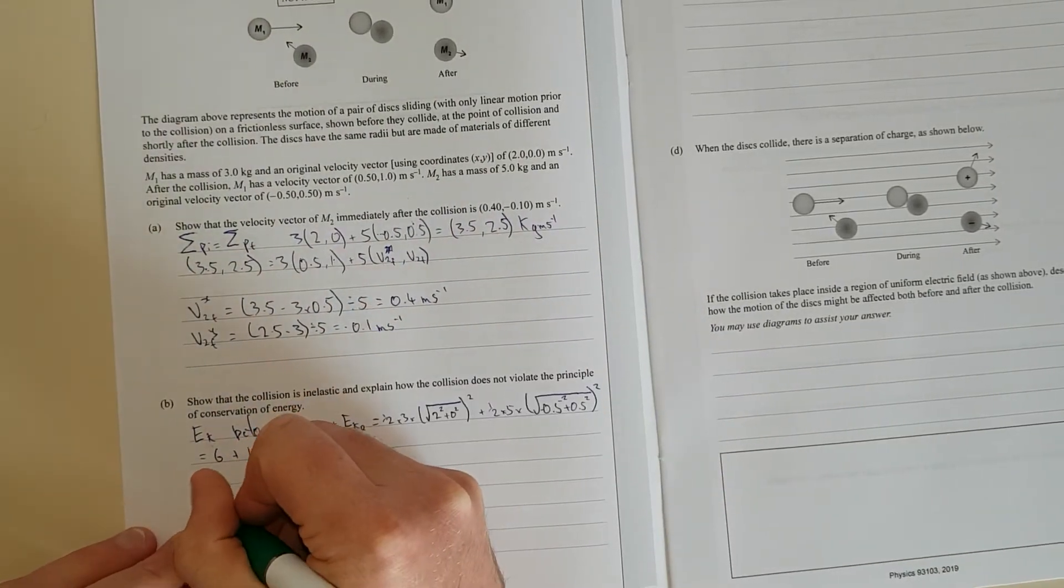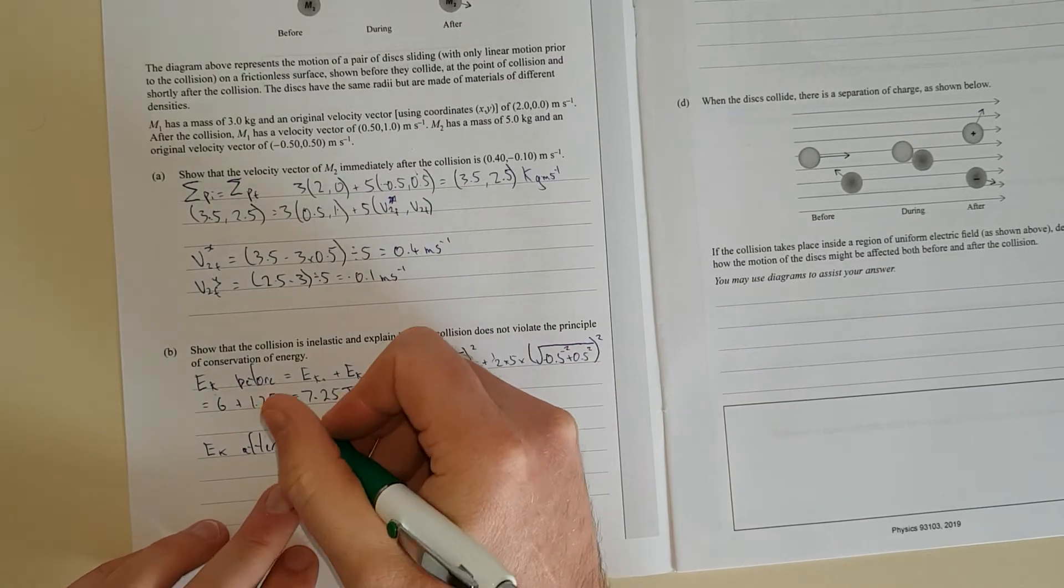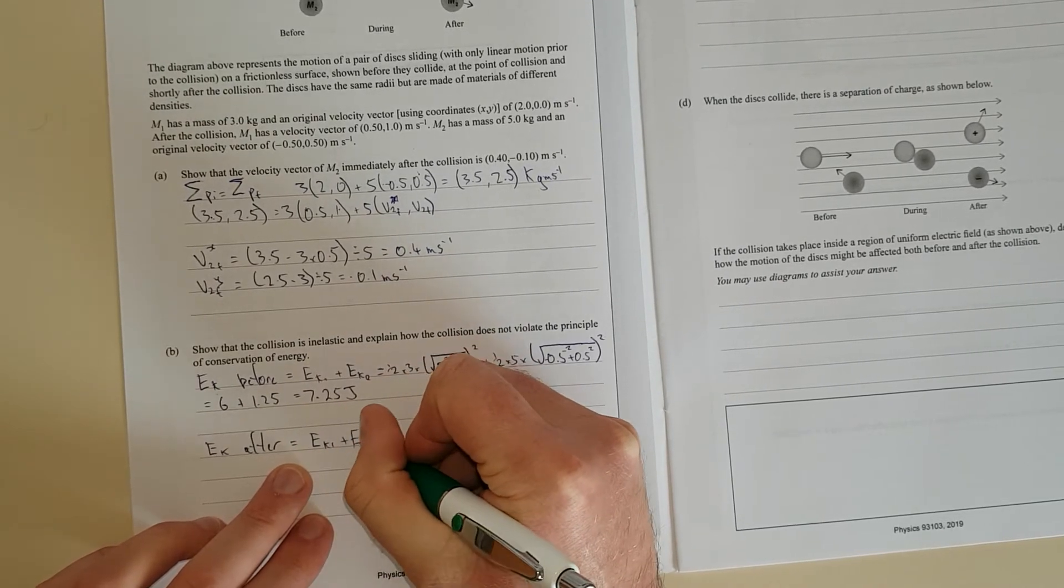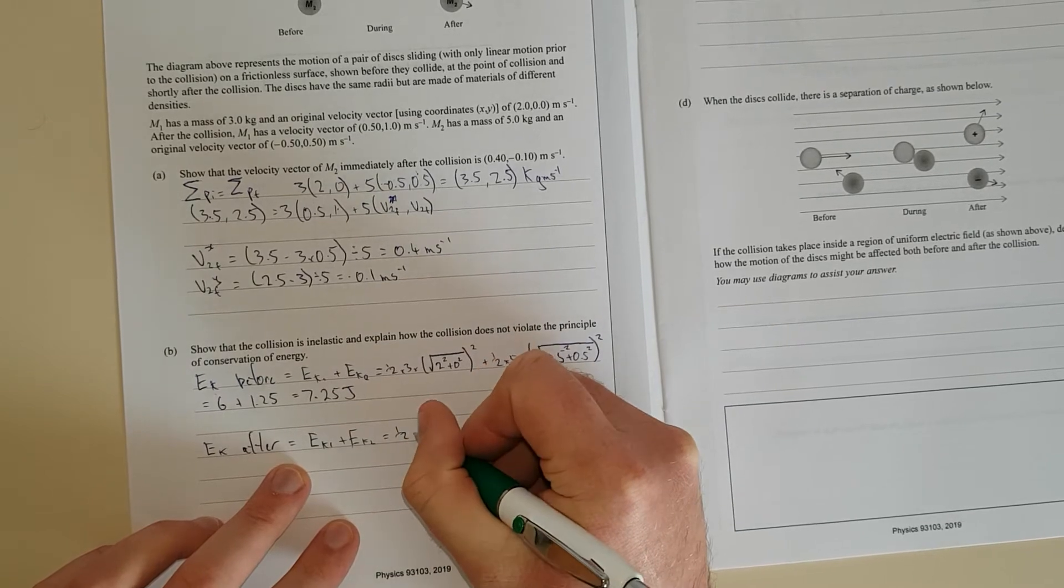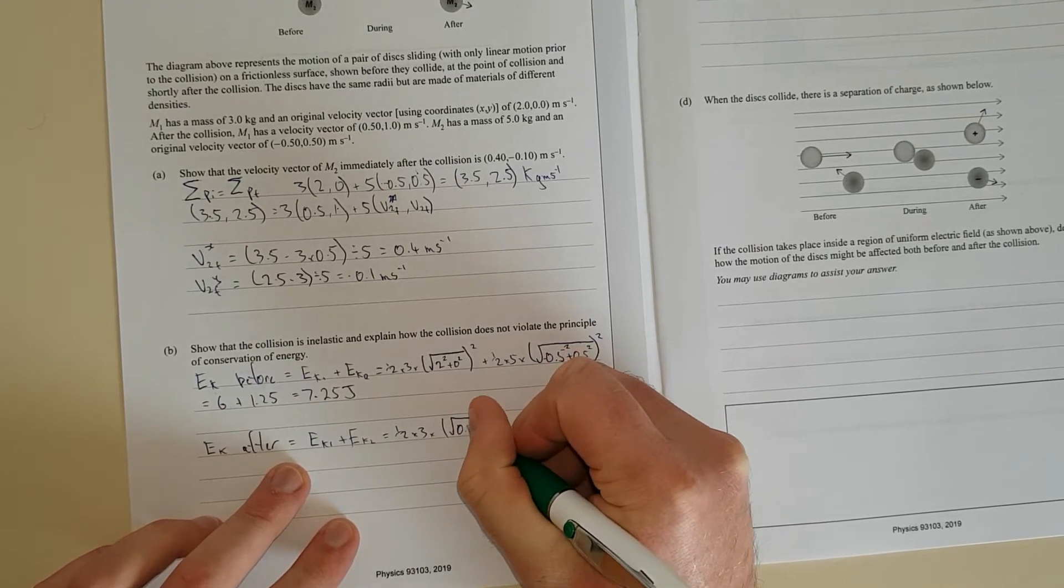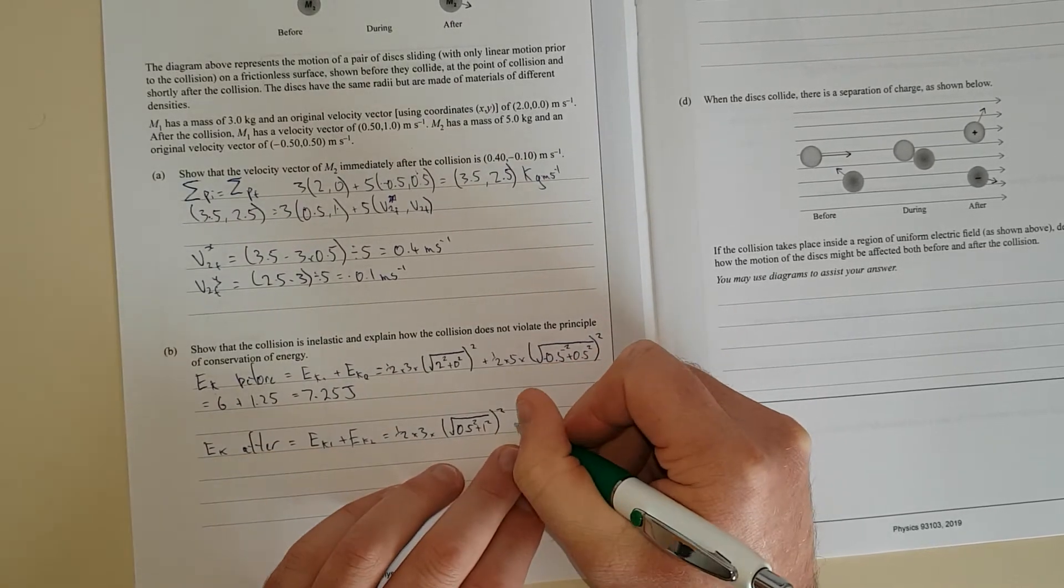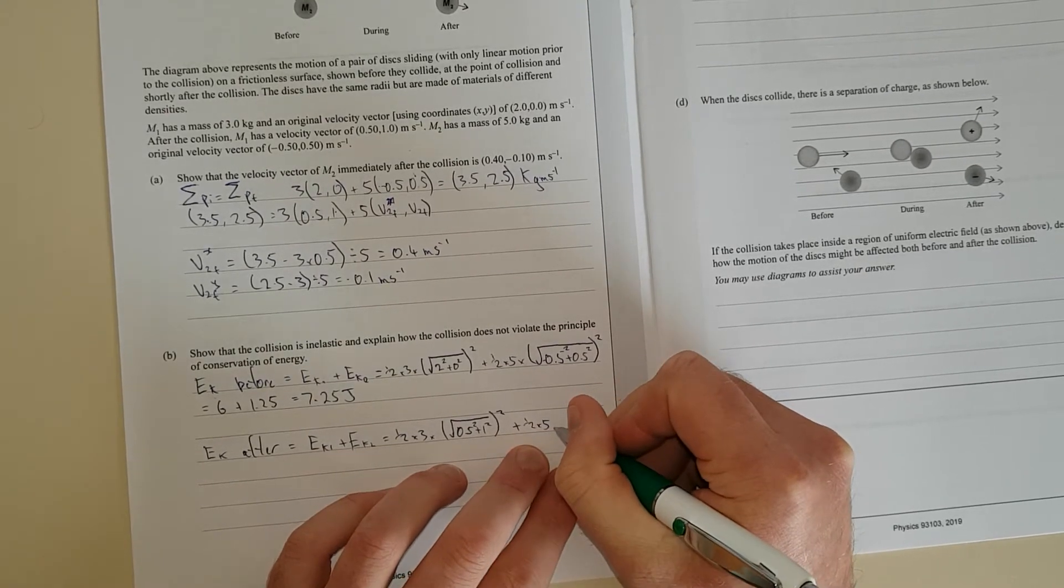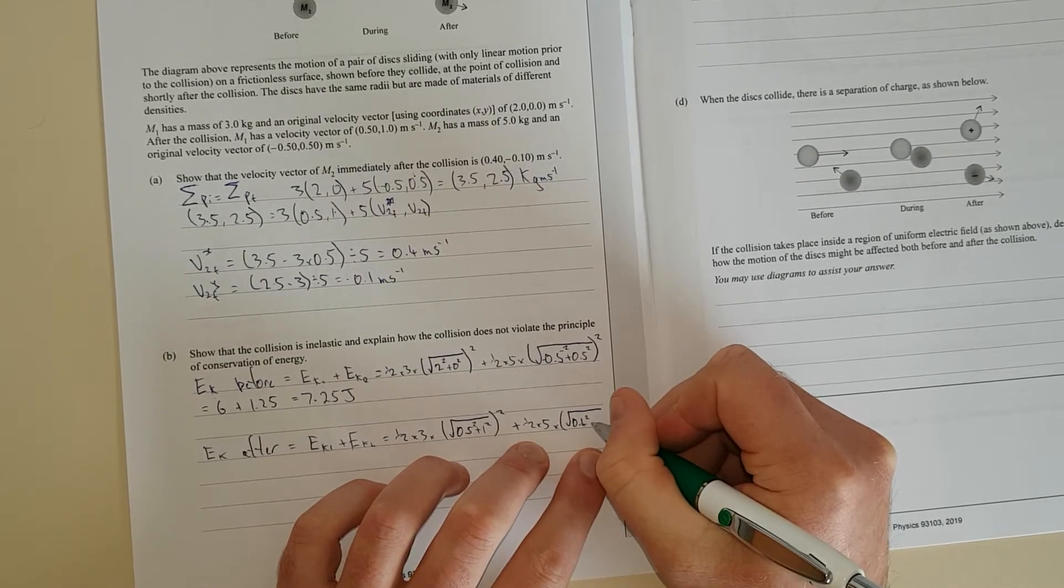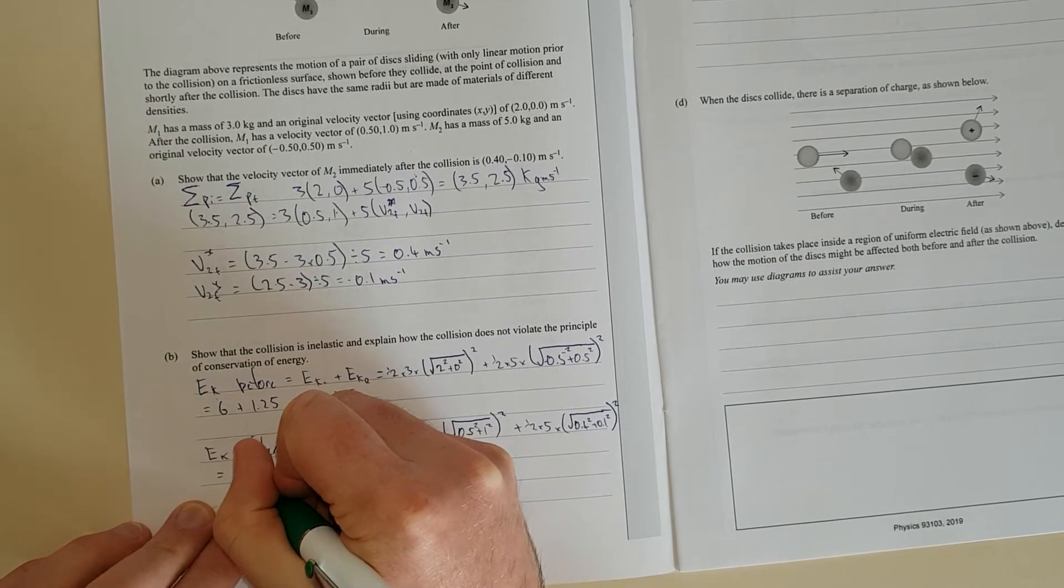We're just going to do the same thing, Ek after equals Ek1 plus Ek2. That's half times 3 times (0.5² + 1²) plus half times 5 times (0.4² + 0.1²), and that equals 2.3 joules.